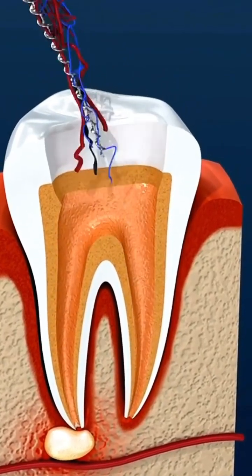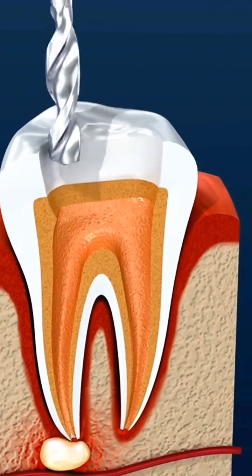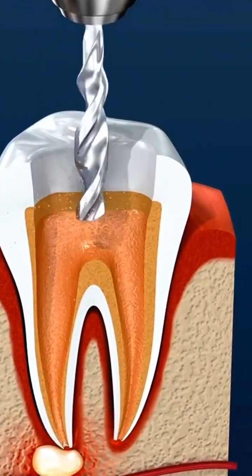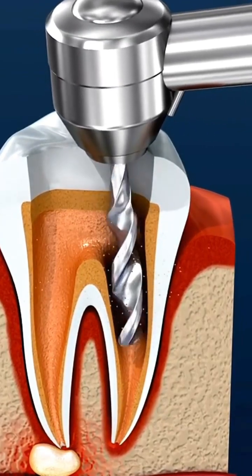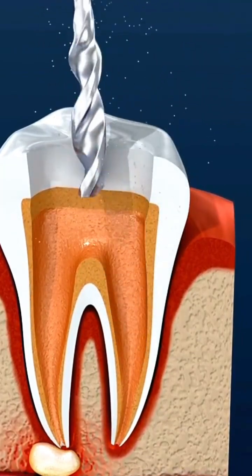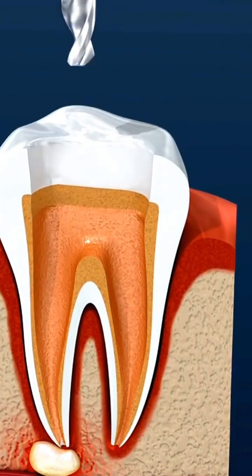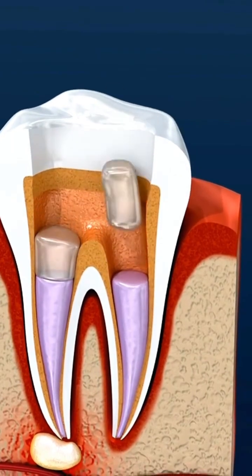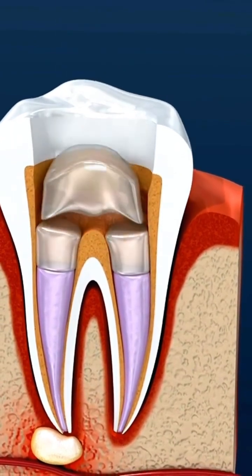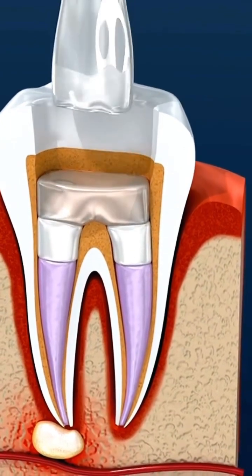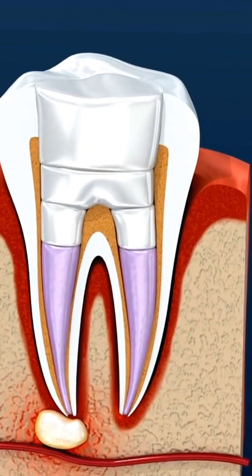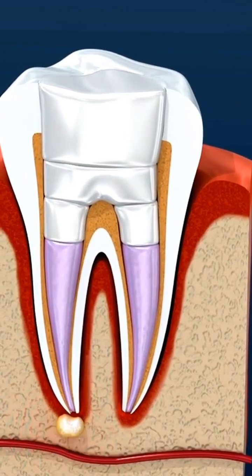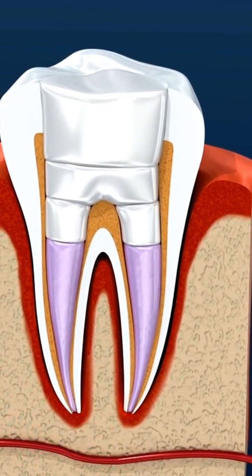To gain access to the pulp, a hole in the crown of the tooth is created. Small files are used during a traditional root canal treatment to remove sick tissue and damaged tooth structure, as well as shape the inside of the canal to accept the material used to fill the tooth. Once the canals have been shaped, the tooth roots are totally sealed off and a temporary filling is placed.